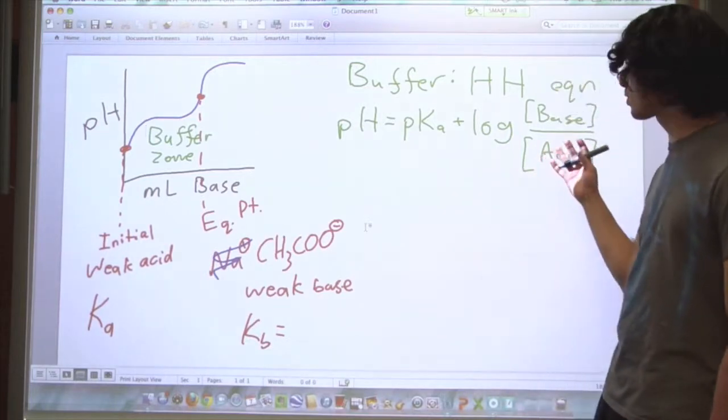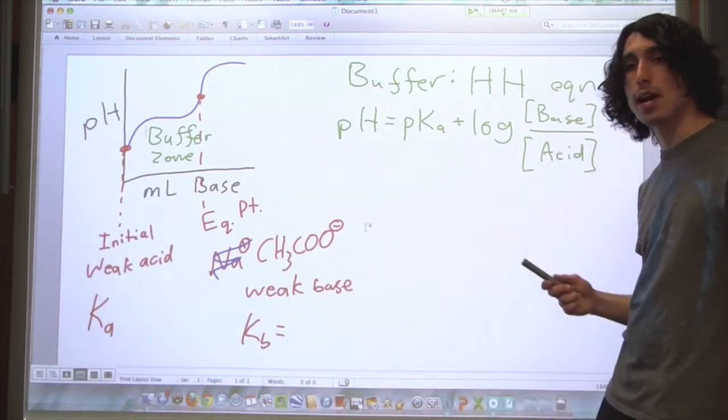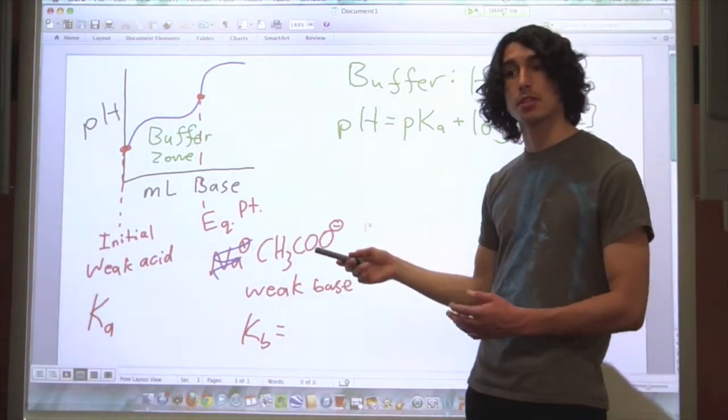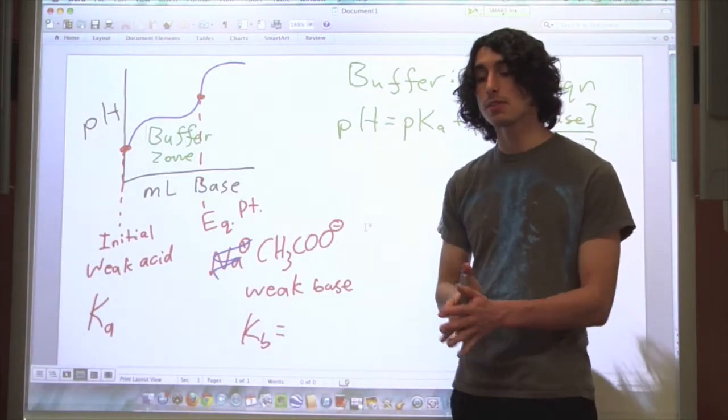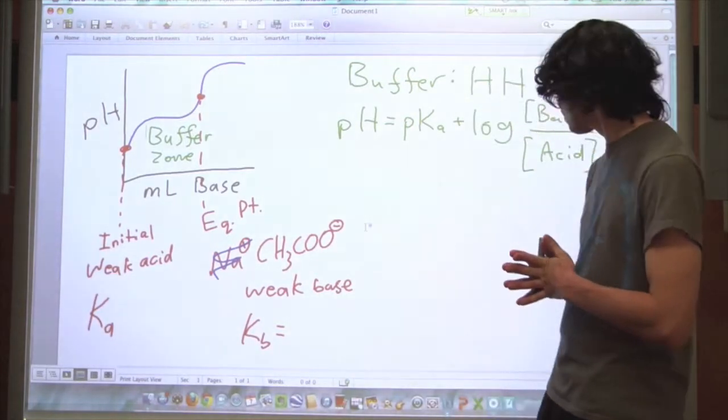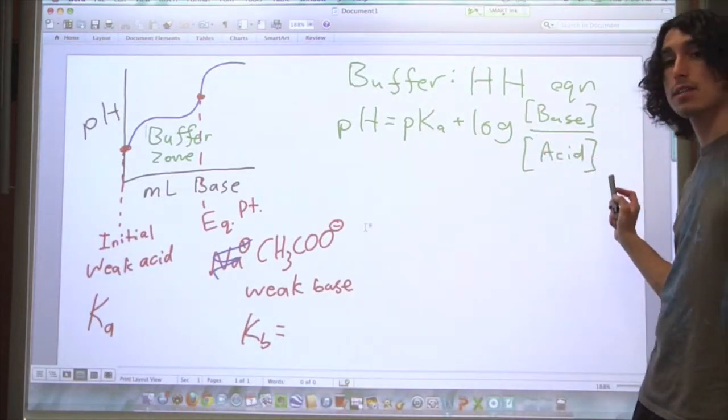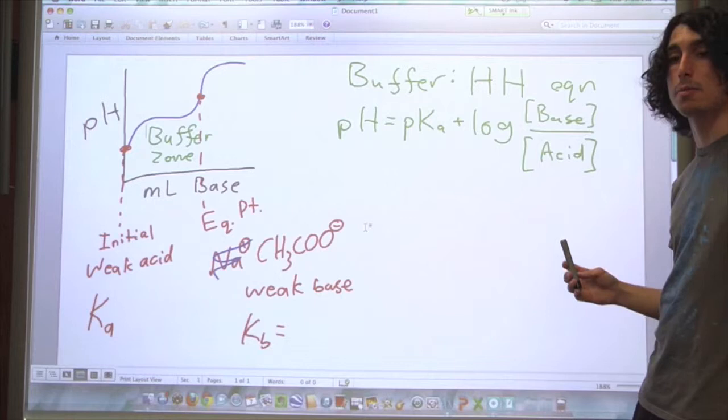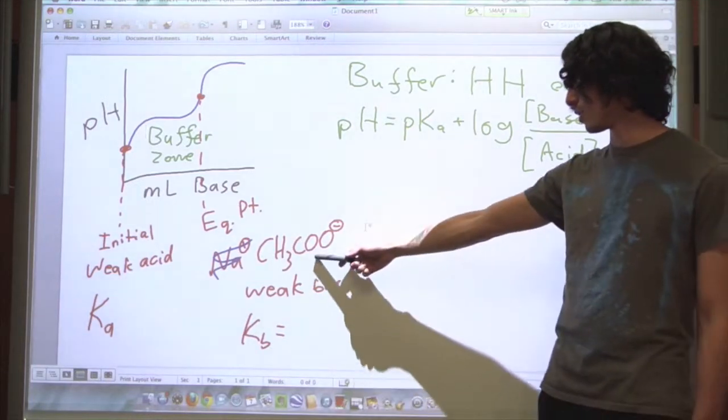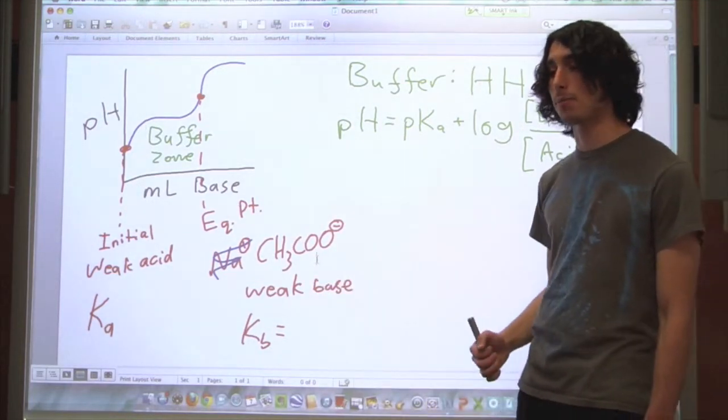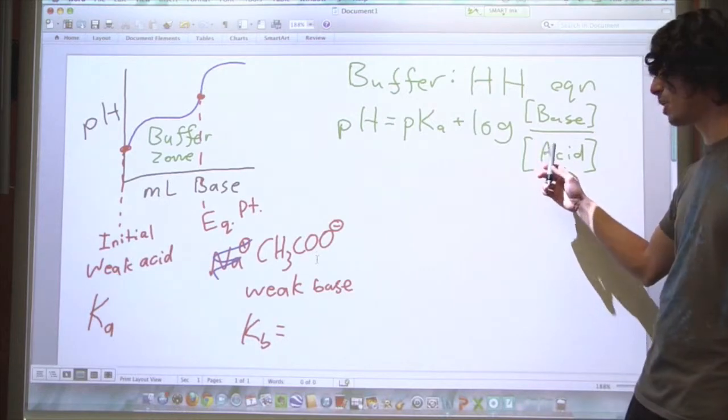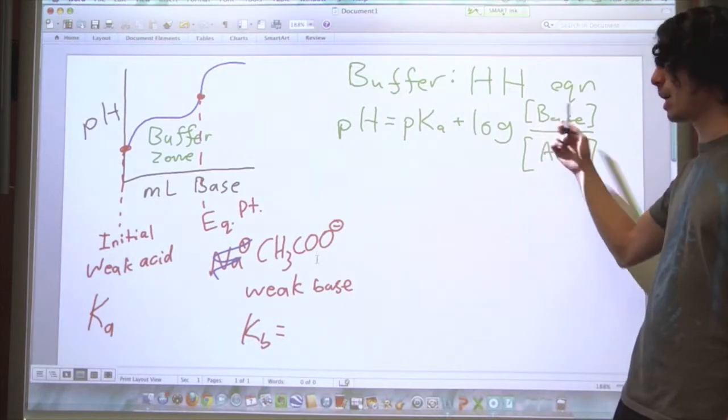So the only confusing part about this equation might be, what base and what acid? Because I have acetic acid and sodium hydroxide, is that what it means? Well, not quite. These are conjugates of each other. So if acetic acid is the acid, then the base has to be the conjugate base of acetic acid, which is the acetate ion we've been talking about. So this would be acetic acid and this would be acetate.